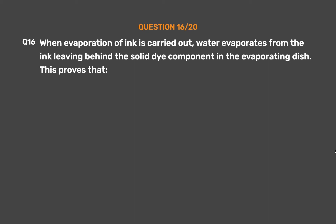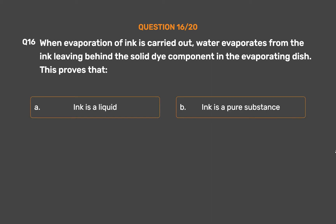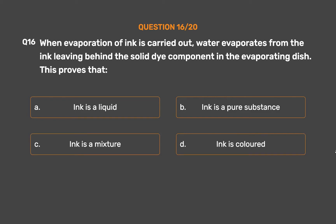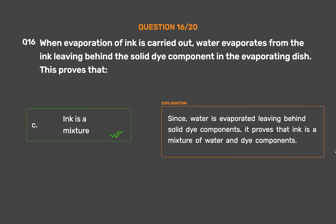Question number 16. When evaporation of ink is carried out, water evaporates from the ink leaving behind the solid dye component in the evaporating dish. This proves that: Option A: Ink is a liquid. Option B: Ink is a pure substance. Option C: Ink is a mixture. Option D: Ink is colored. The correct answer is Option C: Ink is a mixture. Since water evaporates leaving behind solid dye components, it proves that ink is a mixture of water and dye.